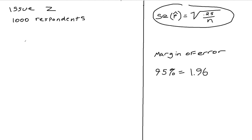Let's say we've got issue Z and we've got 1,000 respondents and we need to figure this out. Now one of the most important things to remember when you're doing this is quite often you're working to 95%.